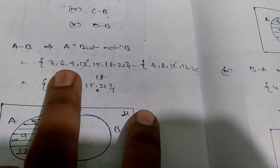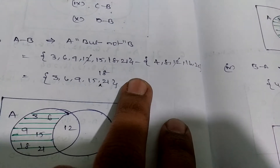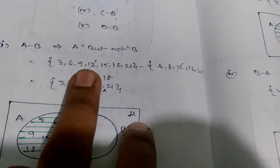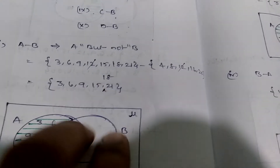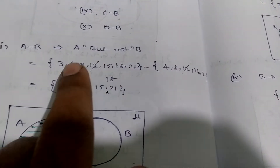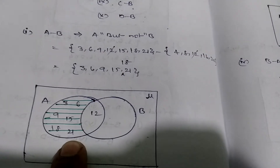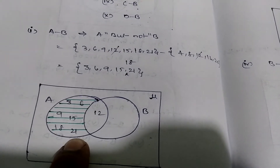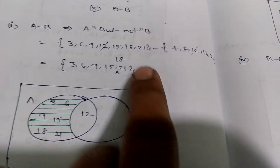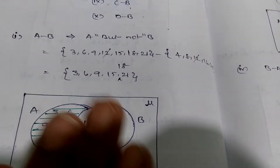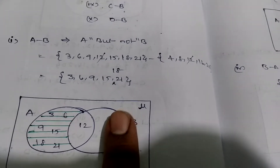Set A is multiples of 3 and set B is multiples of 4. Among these, which element is common? The element 12 is repeated, so strike out 12. What is left in set A — mention only those elements. The repeated element is excluded from both sets; other than 12, mention only the set A elements and don't consider set B elements.